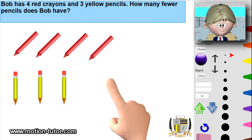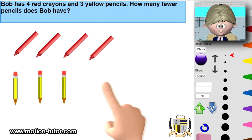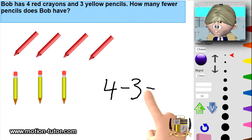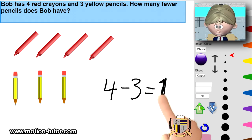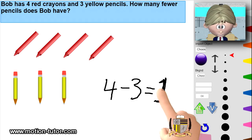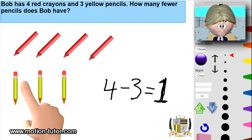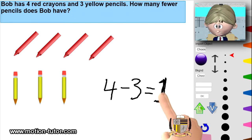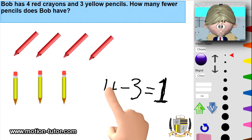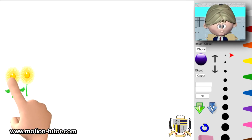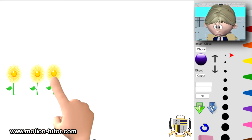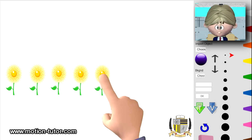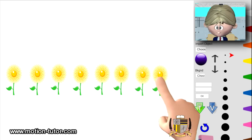That's the difference between his crayons and pencils. He has four crayons minus the three pencils, and that equals a difference of one. One fewer. This one can mean one more crayon than pencils, and also it can mean one fewer pencil than crayons. That's what this one represents — the difference between crayons and pencils. One, two, three, four, five, six, seven, eight.